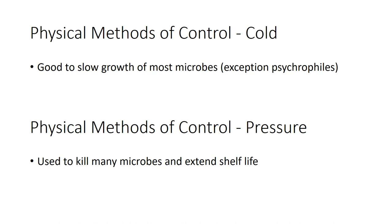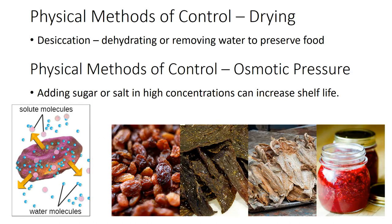Other than heat, what are some methods we can use to control microbial growth? Cold — putting something in the refrigerator — does not sterilize, but it can slow down the growth of microbes to make your food last longer. Pressure is sometimes used to kill some microbes and make things last a little longer on grocery store shelves. Sometimes we'll dry out foods — things like raisins or beef jerky — pulling the water out to preserve food. Osmotic pressure is the fancy way of saying if we add enough sugar or salt, we can increase shelf life. All that sugar in jelly is put in there not just for taste, but to keep microbes from growing.